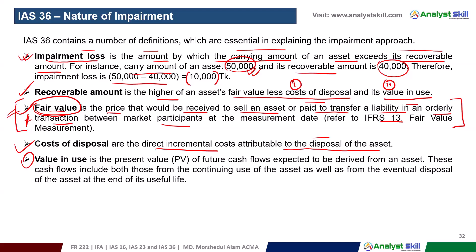Value in use is calculated by taking the cash flows the asset is expected to generate and converting them to present value using a discounted cash flow approach — that is, calculating the net present value (NPV) of the asset's future cash flows.